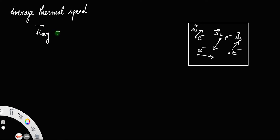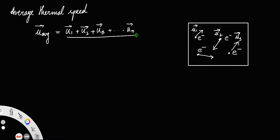Since velocity is a vector quantity, we mark the vector sign. The average thermal velocity u-average equals (u1 + u2 + u3 + ... + un) / n, and this must equal zero. This is because at room temperature we never get a current from any conductor, since the average thermal velocity is zero.